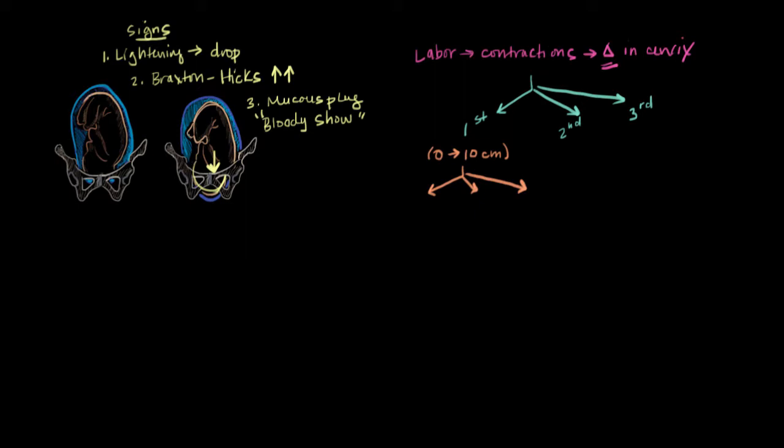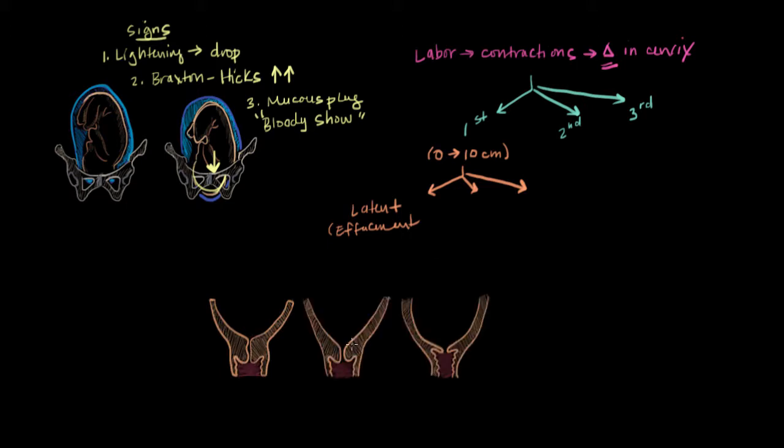And the first of those phases is called the latent phase. And during the latent phase, contractions become stronger, they become more frequent and more regular. And most of what's happening during this phase is the thinning or the effacement of the cervix. So that looks something like this. You can see the cervix is becoming thinner, right? Not too much dilatation is occurring. In fact, at most, the cervix will become three centimeters dilated, max, during this phase.